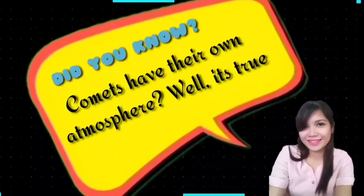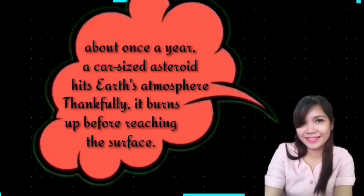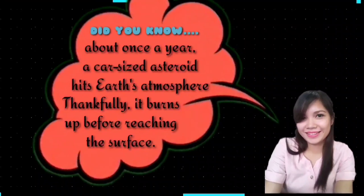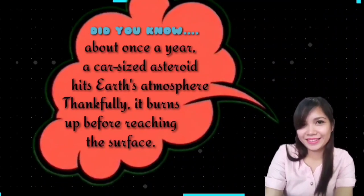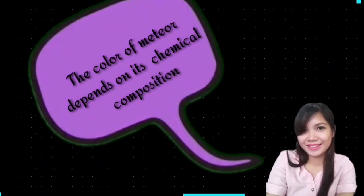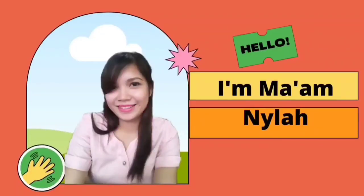Did you know that comets have their own atmosphere? Did you know that about once a year a car-sized asteroid hits Earth's atmosphere? Thankfully, it burns up before reaching the surface. Did you know the color of a meteor depends on its chemical composition? Hello, I'm your science teacher. Let me help you study the topic of asteroids, comets, and meteors.